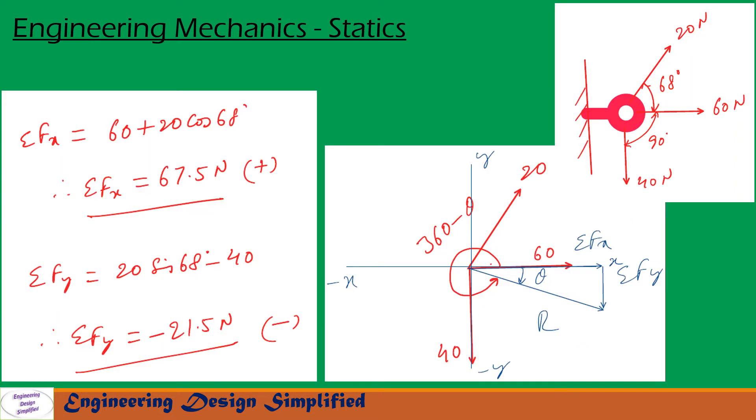In order to find a resultant of these three forces, first we need to resolve forces along x direction, that is horizontal. So along x direction, 60 Newton plus horizontal component of this 20 Newton is 20 cos 68 degrees. And this vertical force will not have any horizontal component. So we get sigma Fx equal to 60 plus 20 cos 68. So the value is 67.5 Newton and that is positive x direction.